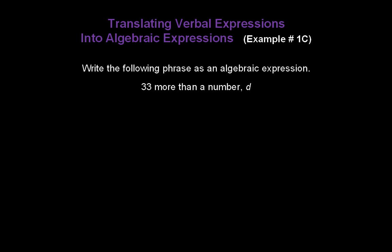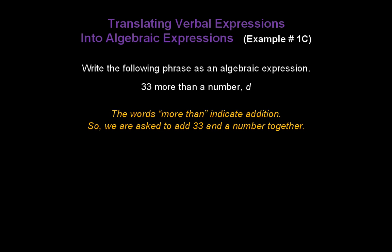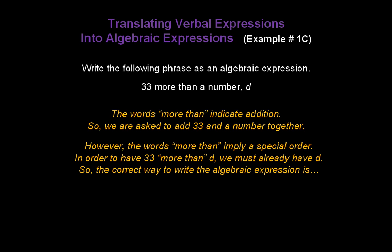Write the following phrase as an algebraic expression: 33 more than a number d. The words more than indicate addition. So we're being asked to add 33 and a number together. However, the words more than imply a special order. In order to have 33 more than d, we must already have d. So the correct way to write the algebraic expression is d plus 33, not 33 plus d.